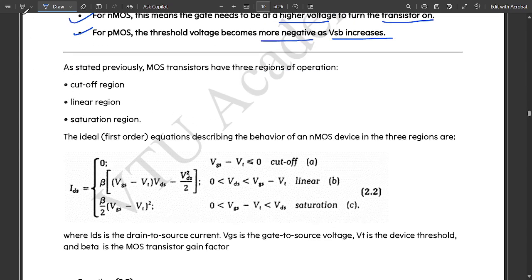Next, as stated previously, the MOS transistors have three regions of operation, which I have already discussed in the previous video. Three regions of operations we have in this MOS transistor: one is cutoff region, another one is linear region, and the third one is saturation region.